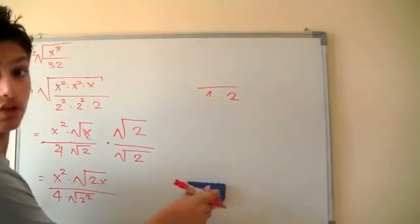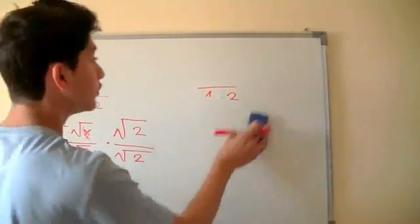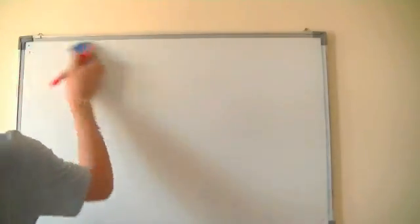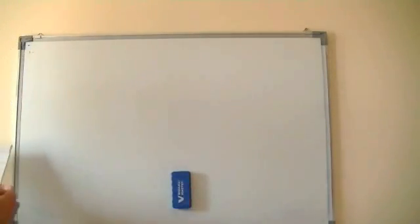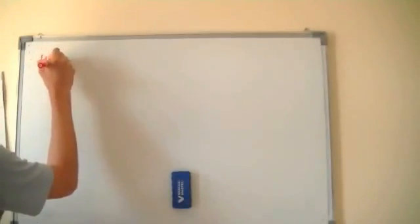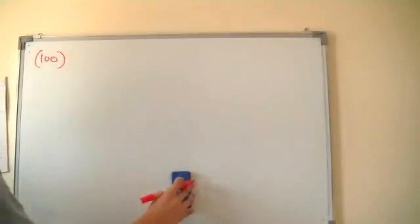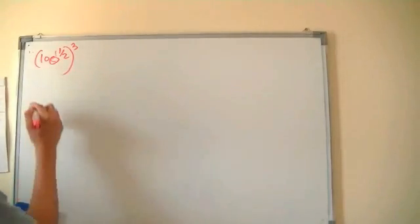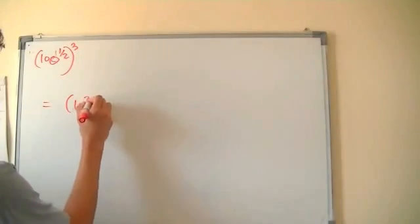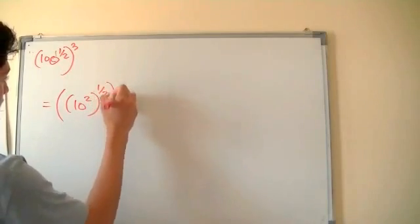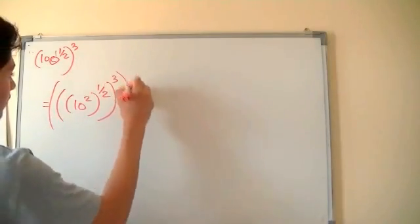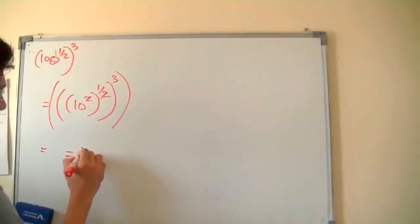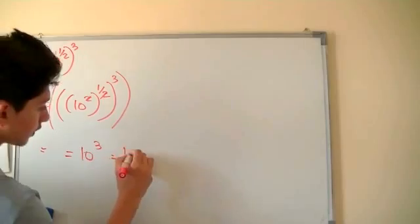Now let's solve some radical exponent examples. The first one is 100 raised to the half exponent, raised to the 3rd power. Since 100 is 10 squared, it becomes 10 squared raised to the half exponent, raised to the third power. You cancel the square and the half exponent, leaving 10 raised to the 3rd power, which gives 1,000.